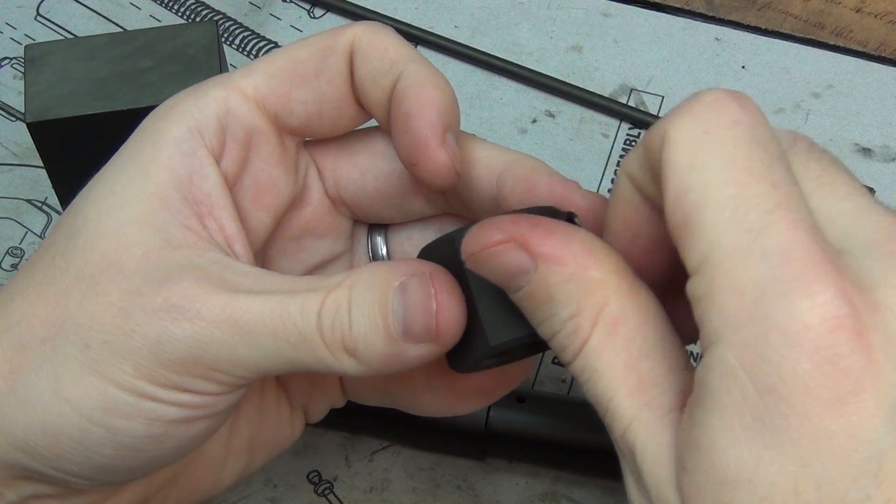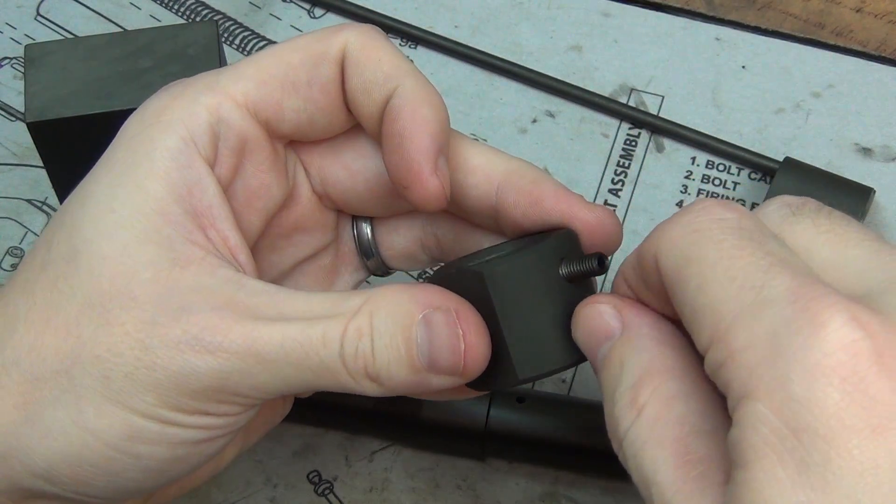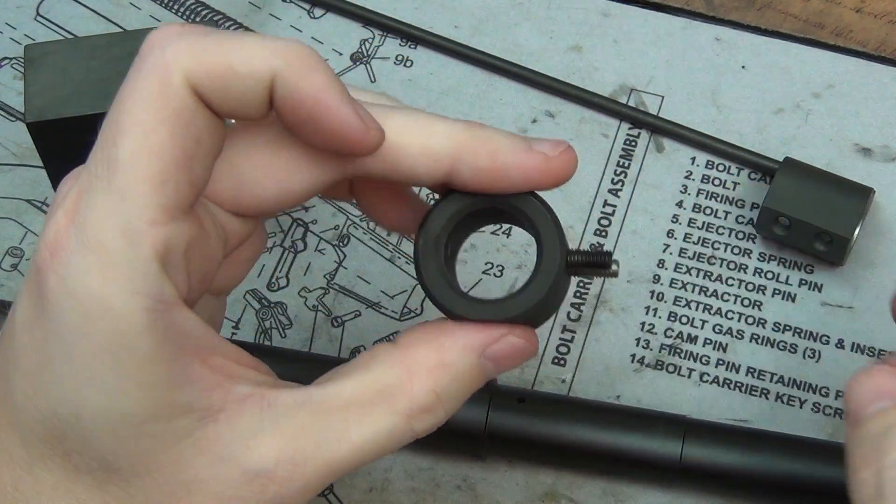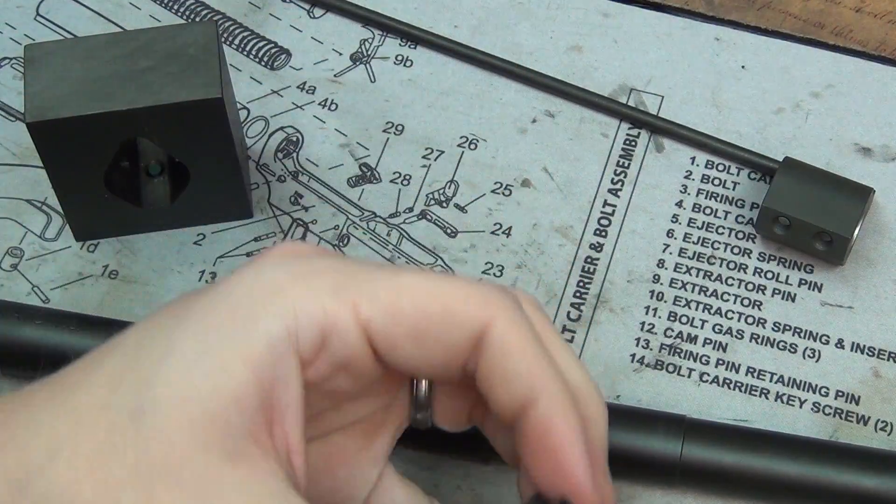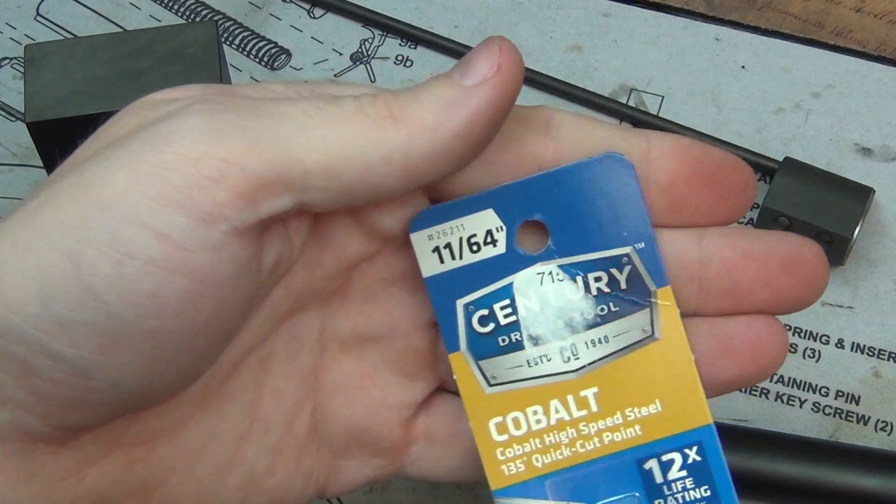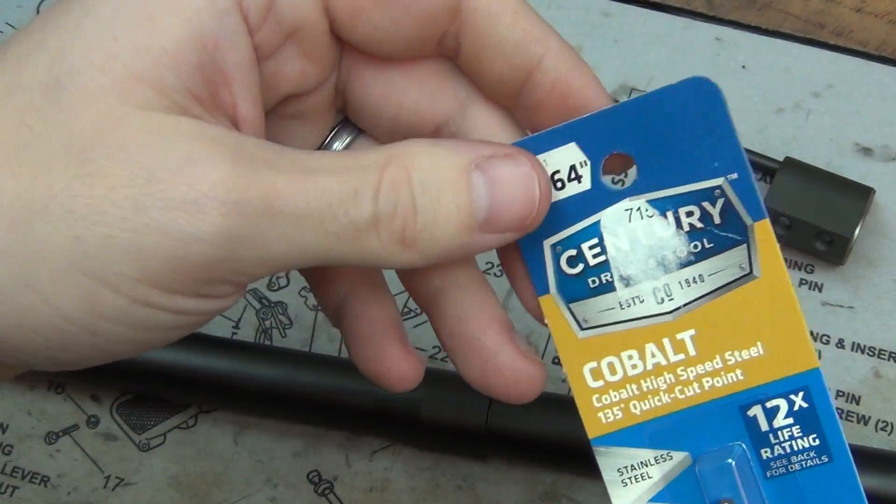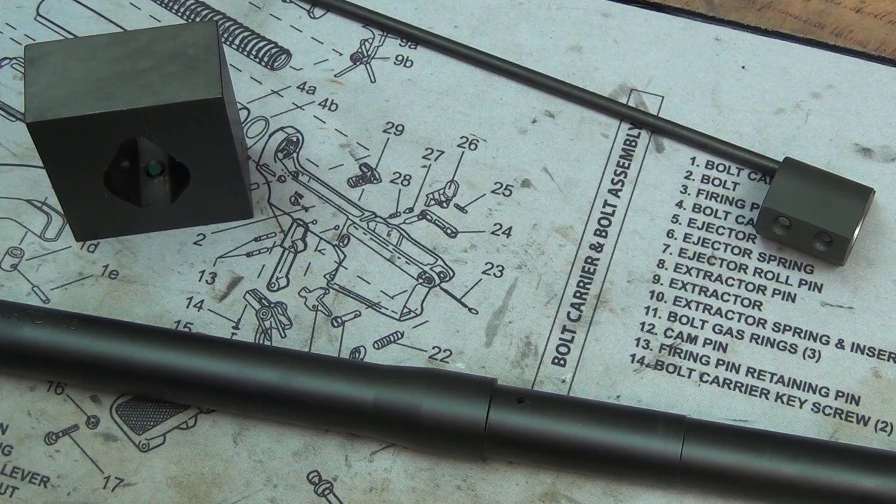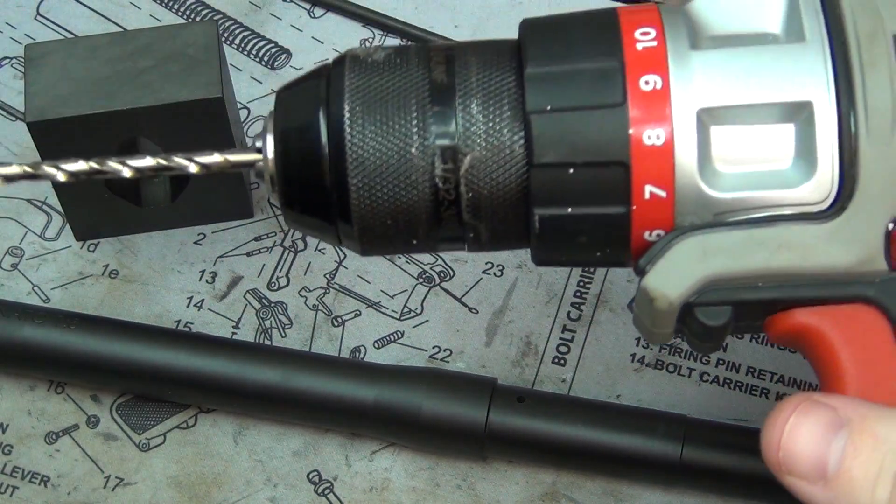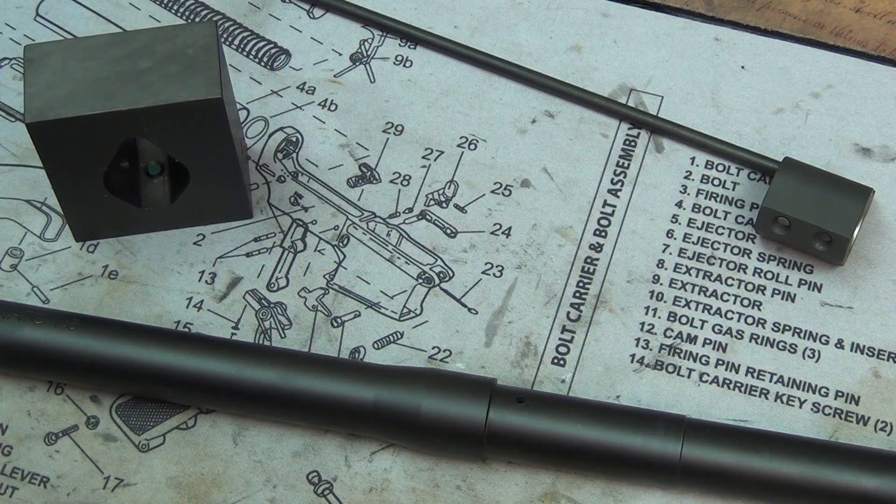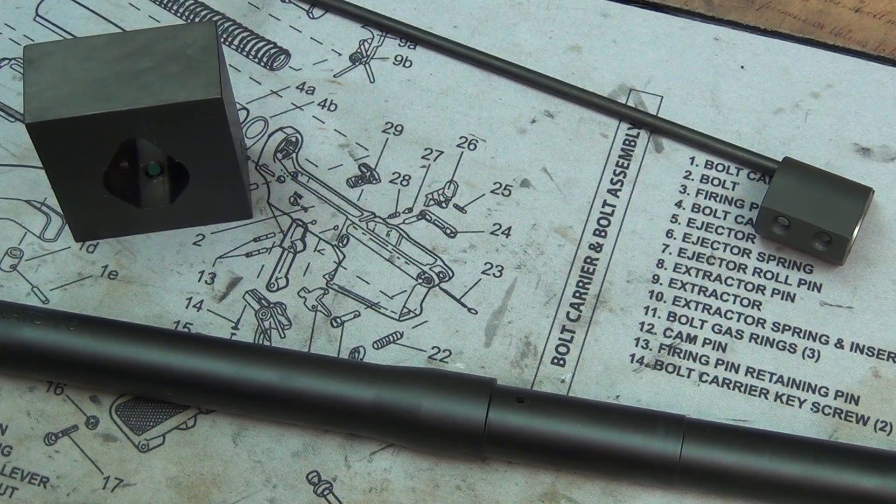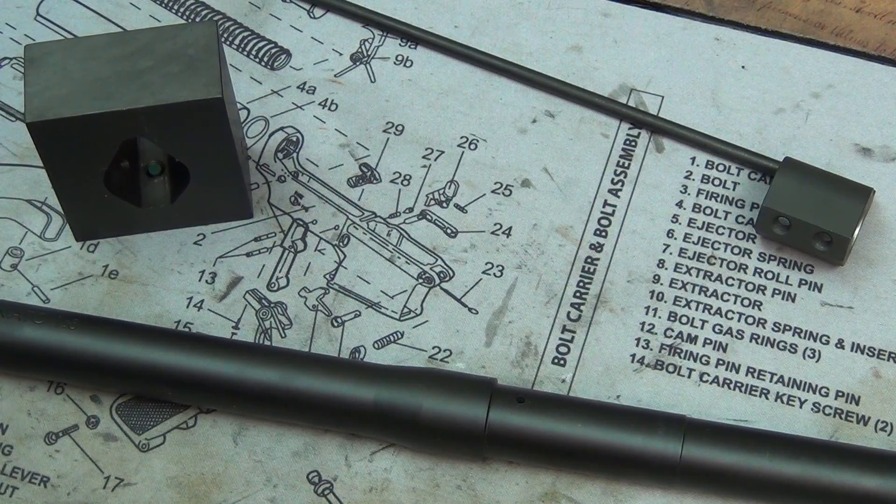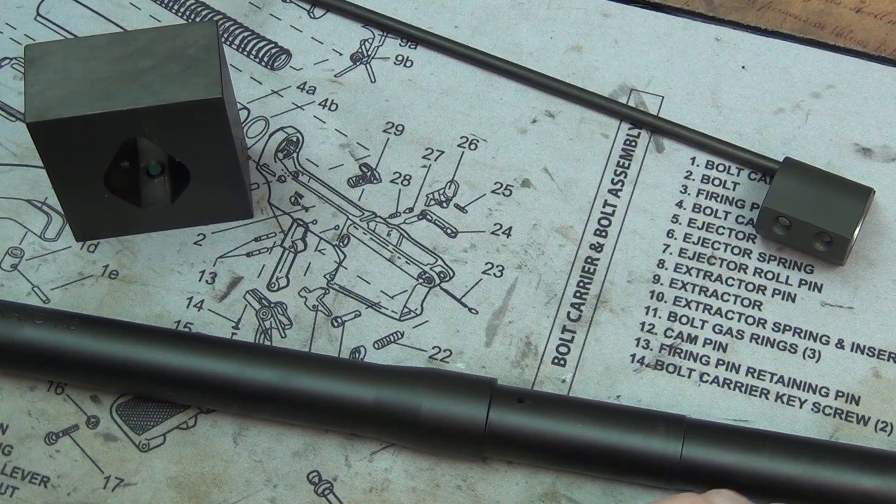Literally all you need for dimpling your barrel with this is the jig, an 11/64 inch drill bit, and then you can use a drill press or a hand drill. I'm just going to use this electric battery-powered Craftsman 20-volt drill.